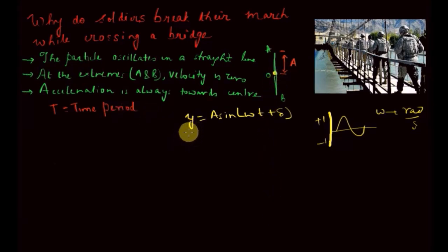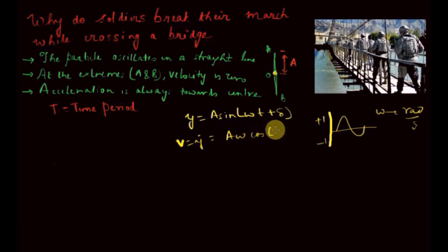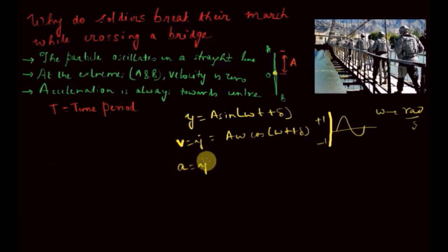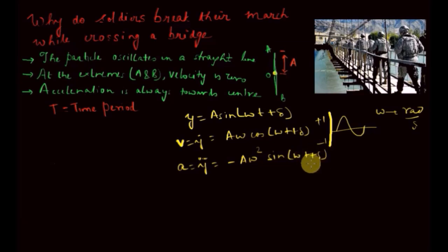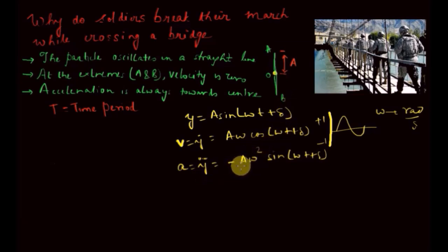If we differentiate y with respect to time, we get the velocity: v = Aω cos(ωt + δ). Differentiating again gives acceleration: ÿ = −Aω² sin(ωt + δ). Notice the negative sign — acceleration is always in the direction opposite to the displacement, meaning it always acts towards the center. This satisfies our earlier observation.